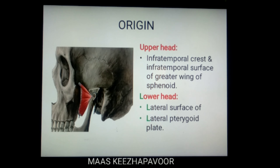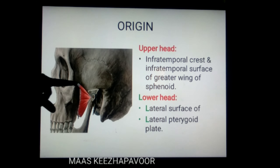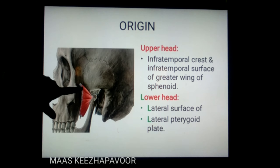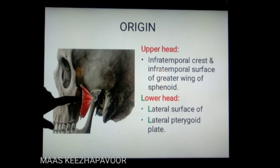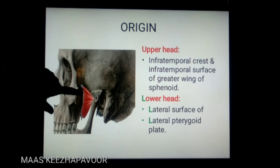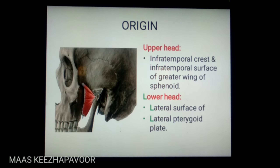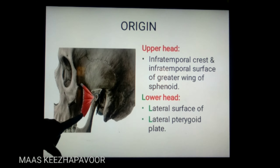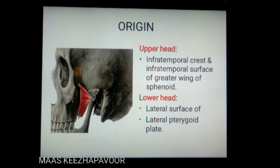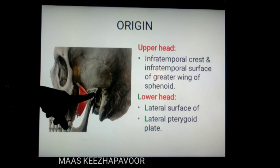The origin of lateral pterygoid: it has got two heads — upper and lower head. The upper head of the lateral pterygoid muscle arises from the infratemporal surface and infratemporal crest of the greater wing of sphenoid. The lower head of lateral pterygoid muscle arises from the lateral pterygoid plate. The muscle is horizontally placed.